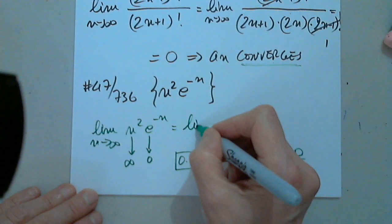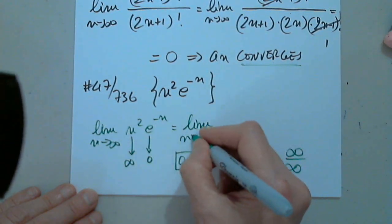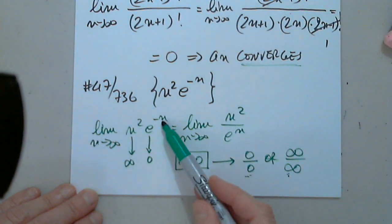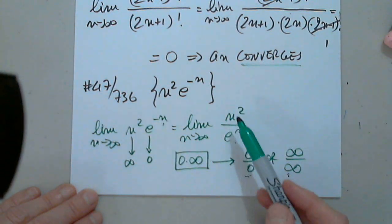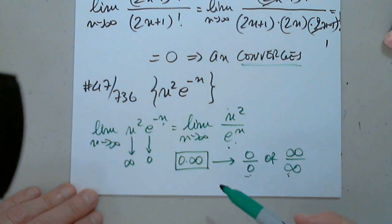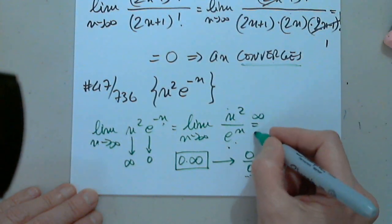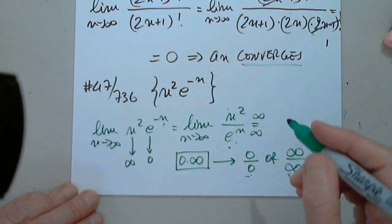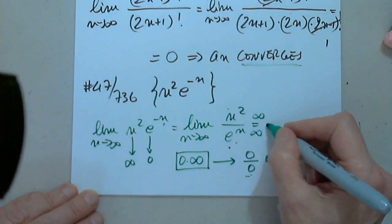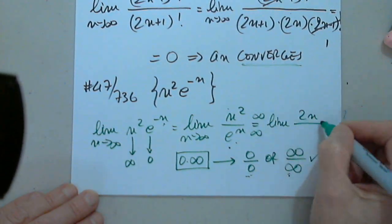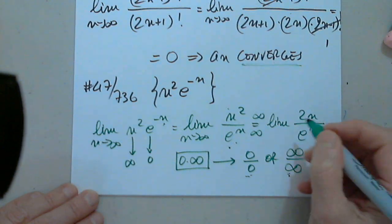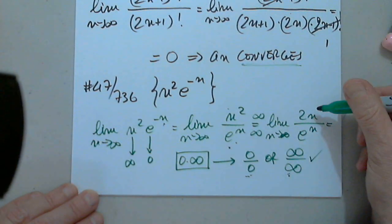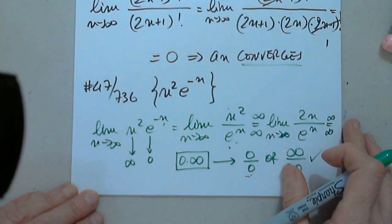A simple algebraic manipulation here does the trick. e to negative n is the same as 1 over e to the n. At this point we have infinity over infinity, which is the situation where we can apply L'Hôpital's rule. We differentiate the top to get 2n and differentiate the denominator to get e to the n. We continue differentiating because this is again infinity over infinity.